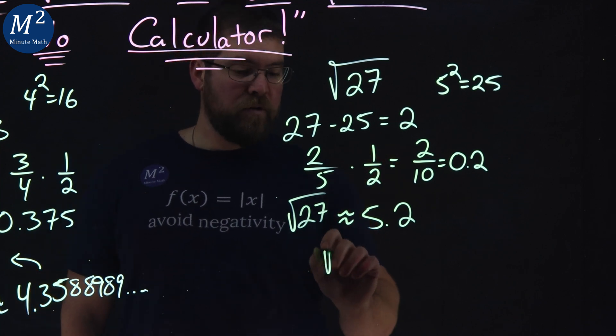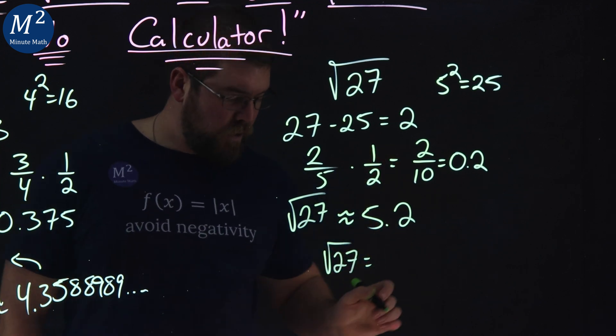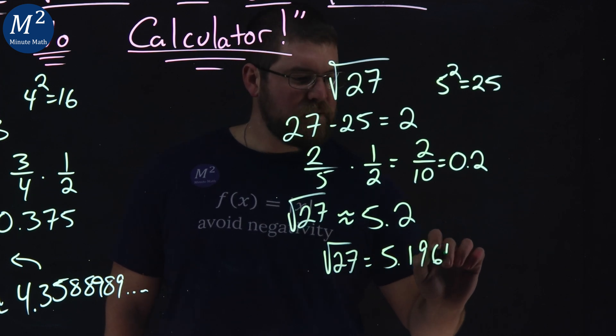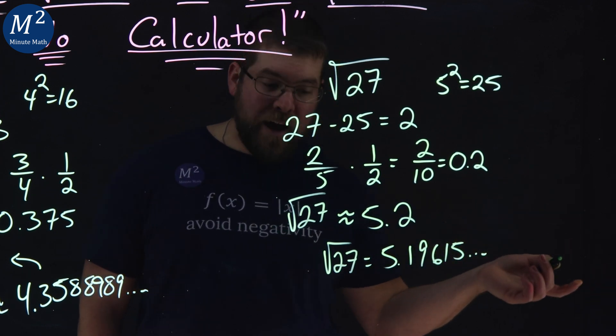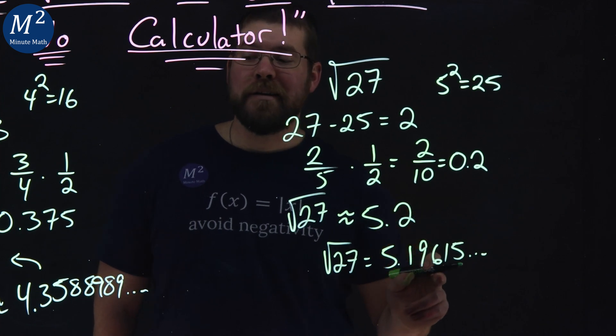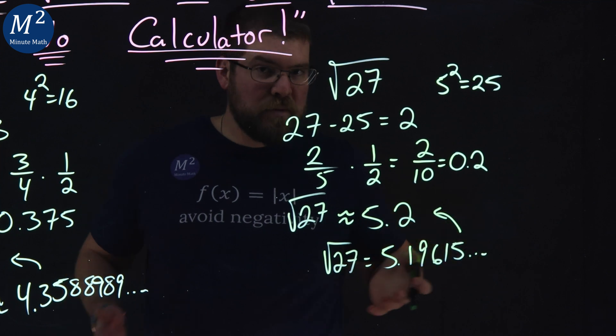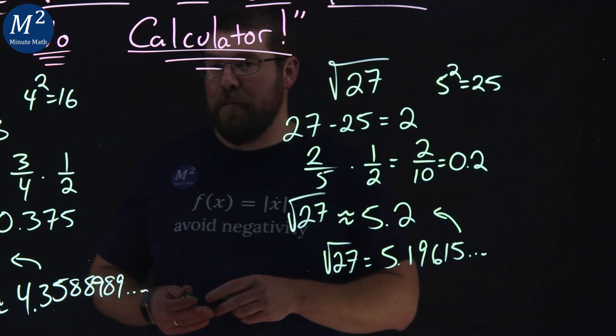What does it come out when you use your calculator? Well, square root of 27 is 5.19615 going on forever, and that's pretty darn close. Square root of 27, we got to be 5.2 approximately, and we can easily do that in our head.